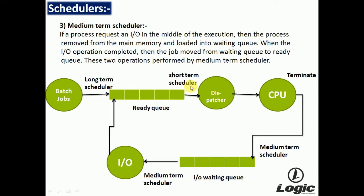These are the three schedulers: long-term scheduler, short-term scheduler, and medium-term scheduler. In the diagram, the long-term scheduler is placed between the batch jobs and the ready queue, and is used for transferring jobs from the batch job queue to the ready queue. When the ready queue is full, it is idle. The short-term scheduler and dispatcher are used for transferring processes from the ready queue to the CPU.